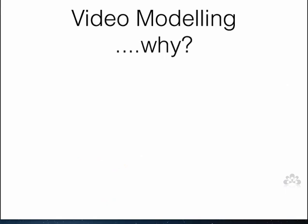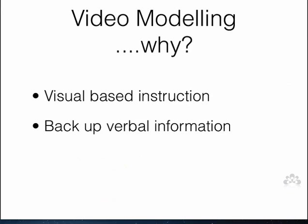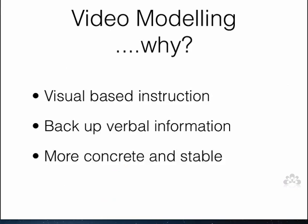Why is video modeling so effective? It's visual-based instruction. We know that people with Autism Spectrum Disorder learn from visual information more easily than from verbal information alone, and the same is true for people with intellectual disability and memory difficulties. It helps to back up verbal information with visual information. Visual information is more concrete and more stable than verbal instruction — if we just give someone a verbal instruction without backing it up with a visual cue such as a keyword sign, a picture, a symbol, or a video, it's gone. When we back it up with a visual cue it helps the person retain the information and understand what they need to do.